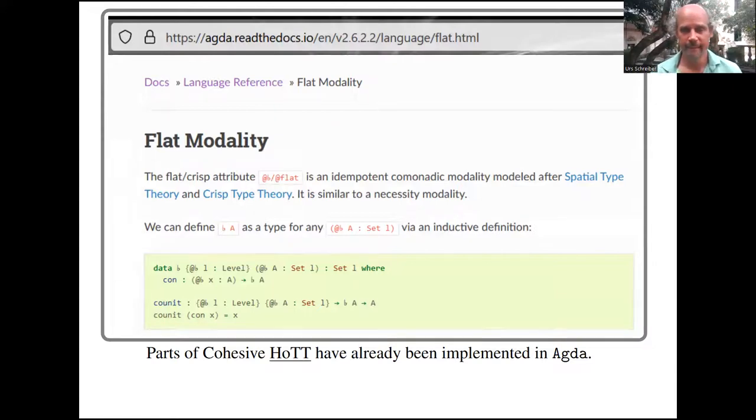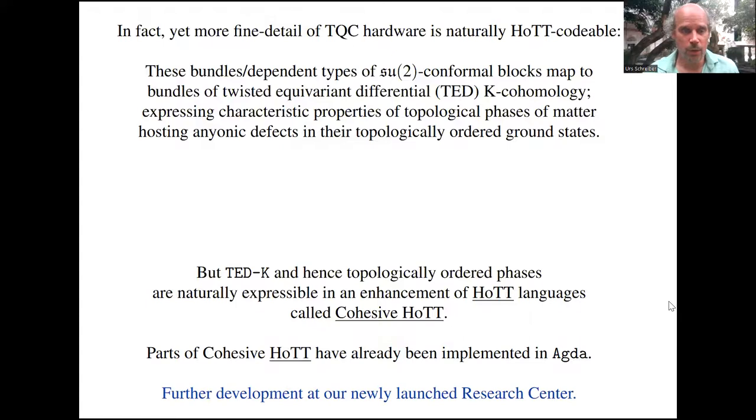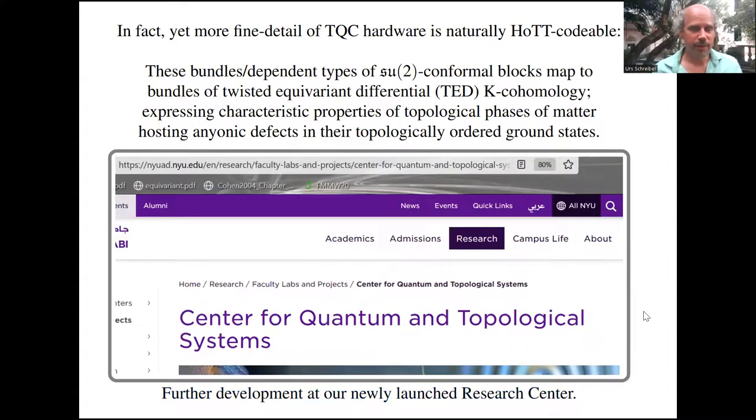In cohesive homotopy type theory, one can implement TED-K-theory and hence these anyon phases. Part of the structure has already been implemented in Agda. Cohesive homotopy type theory consists essentially of adding to plain HoTT two modal operators, and one of them, what I called the flat modality, has been added to Agda. You can open the PhD thesis of Felix to see how he proves theorems in differential geometry using this flat modality in Agda. This needs to be further developed, but there's a clear path for implementing not just hardware-aware topological quantum computation, but even a richer programming paradigm that reflects fine detail of the physics inside which anyon braiding is expected to take place.